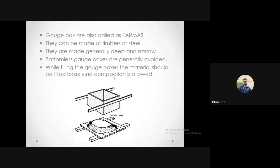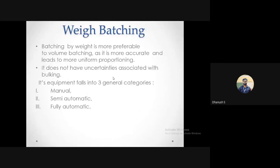Volume batching is a bad idea if you have an option between volume batching and weight batching — always go with weight batching. All experiments in the lab measure things by weight. The only thing measured by volume might be water, but since the density of water is 1000 kg/m³, one liter equals one kilogram so it doesn't matter. Also, when using gauge boxes or pans, never compact the material while measuring — simply pour the contents into the box without tamping, because pre-compacting means you're adding more material than required.